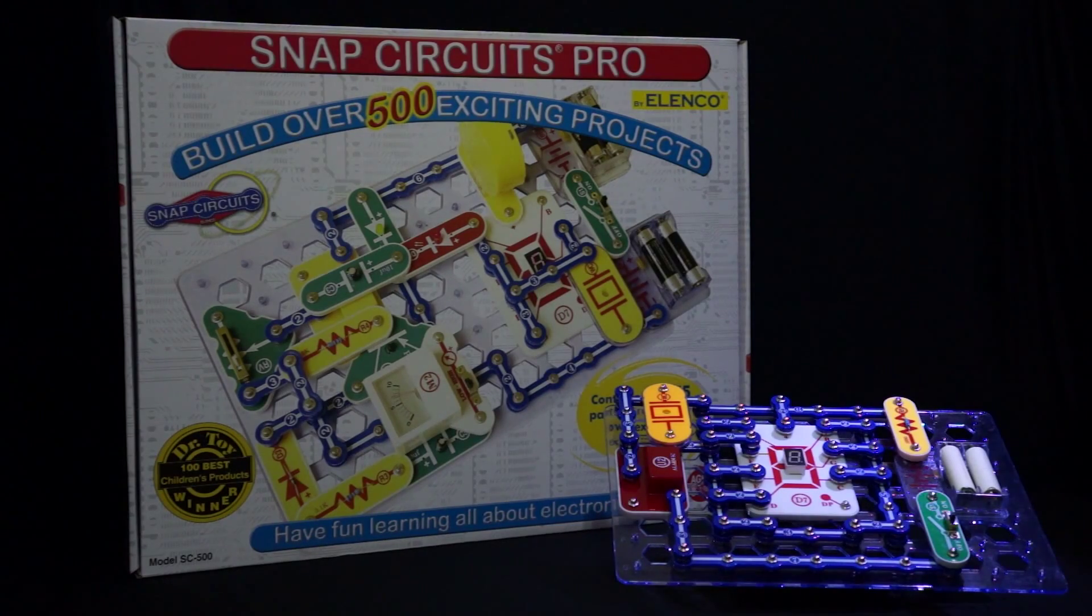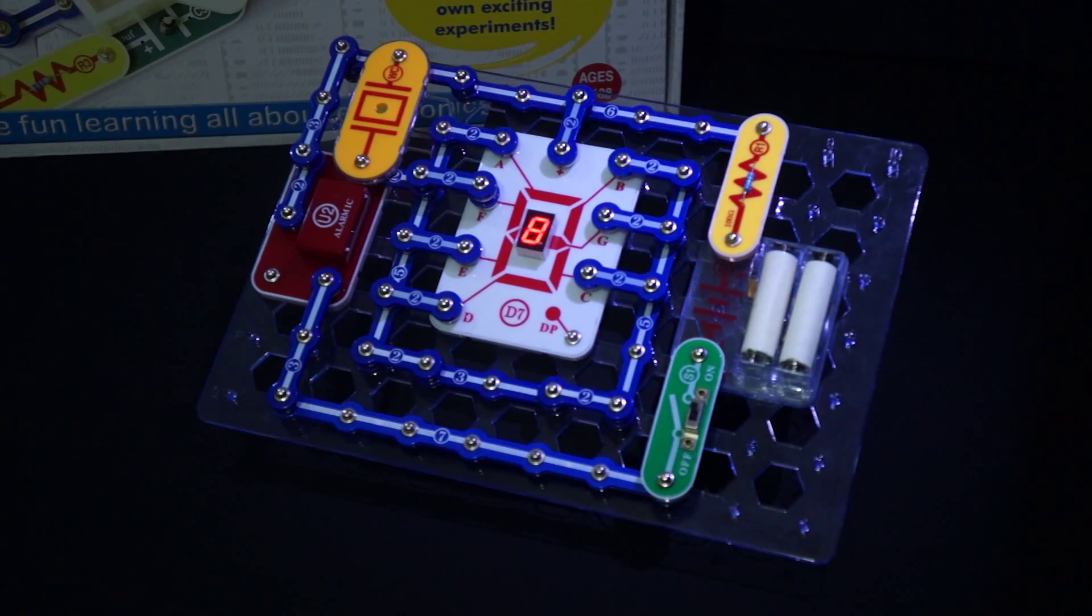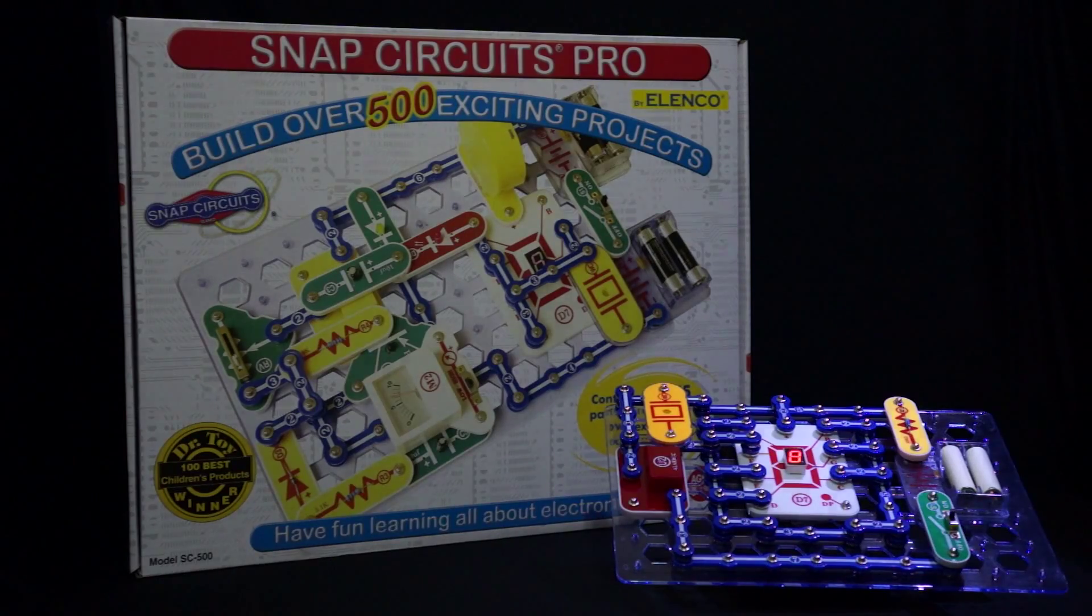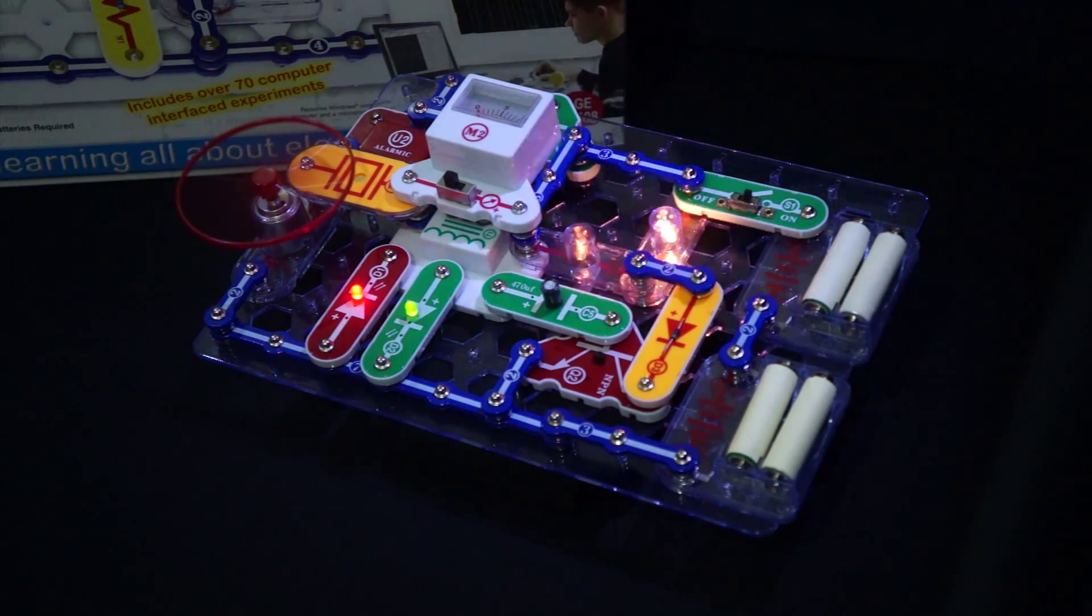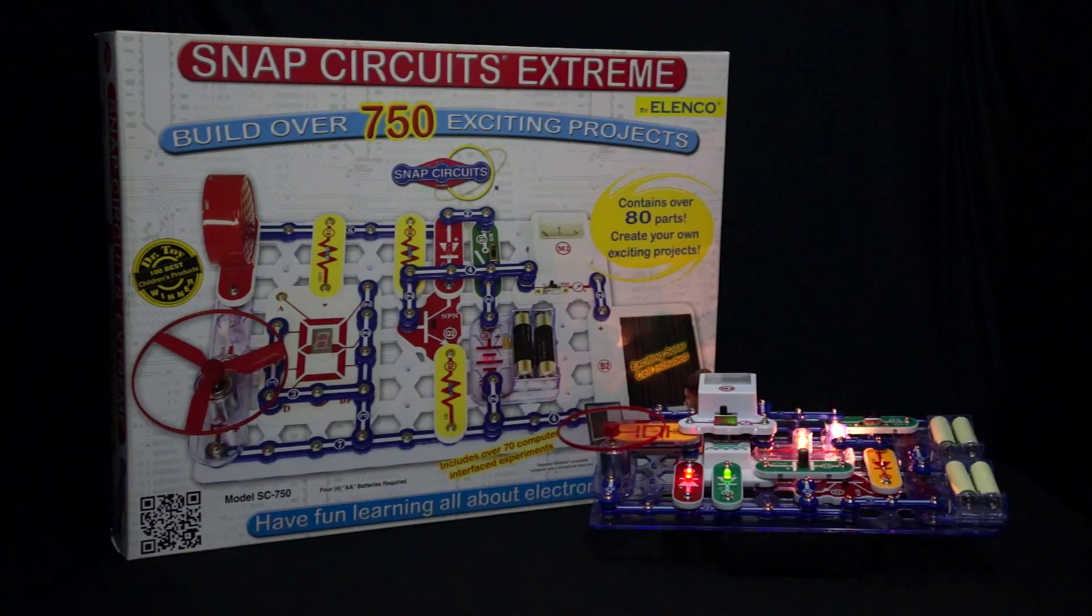Snap Circuits Pro is one of the biggest in the lineup. It offers over 500 projects and 75 parts. Snap Circuits Extreme is the largest set of the series. It offers over 750 projects and contains over 80 parts. The Extreme set also includes 70 computer interface experiments.